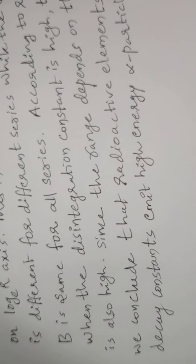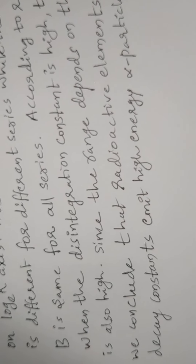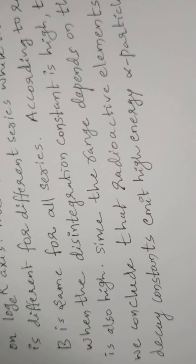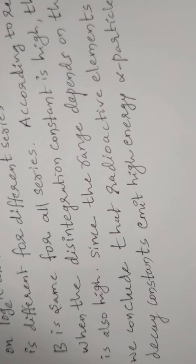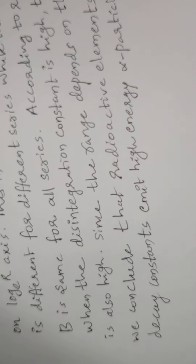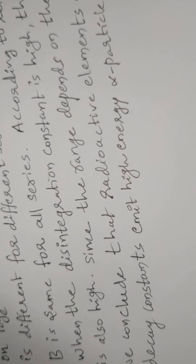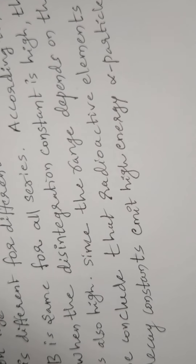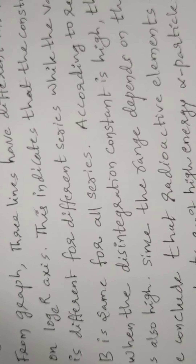This is the conclusion of the Geiger-Nuttall law: the range of alpha particles is high for high disintegration constant values, corresponding to the short half-life of radioactive substances. The half-life period of a radioactive substance is inversely proportional to the decay constant. A low decay constant means a long half-life; a high disintegration constant means a short half-life. So high-range or high-energy alpha particles correspond to a low half-life period. Thank you students.